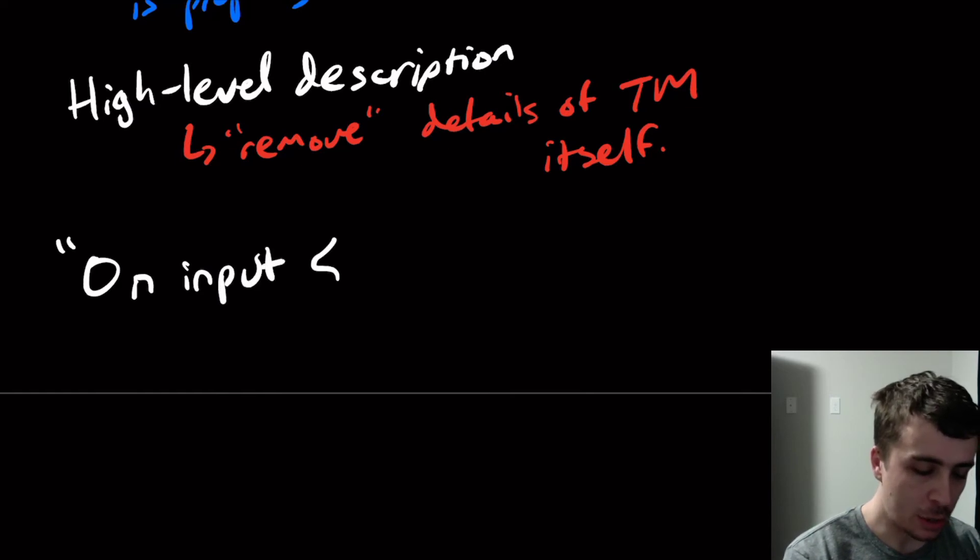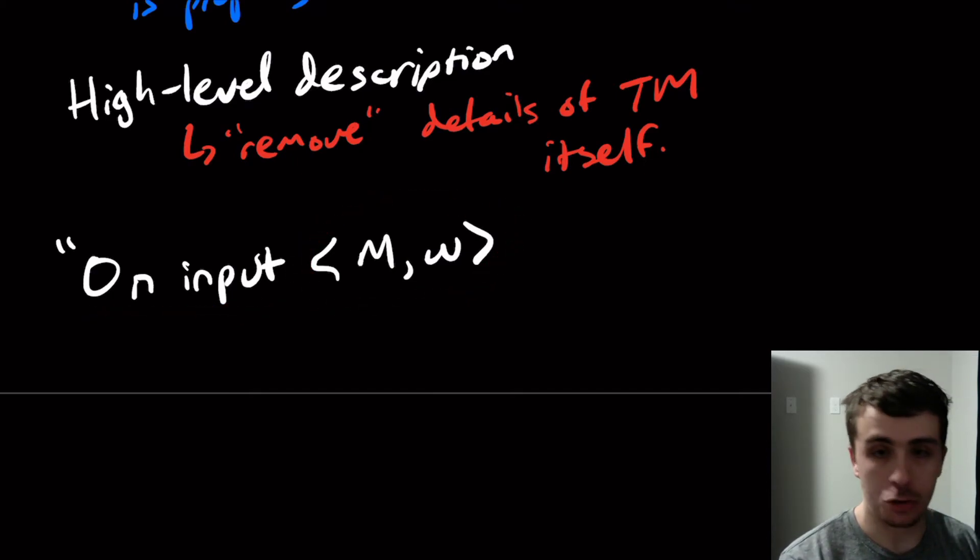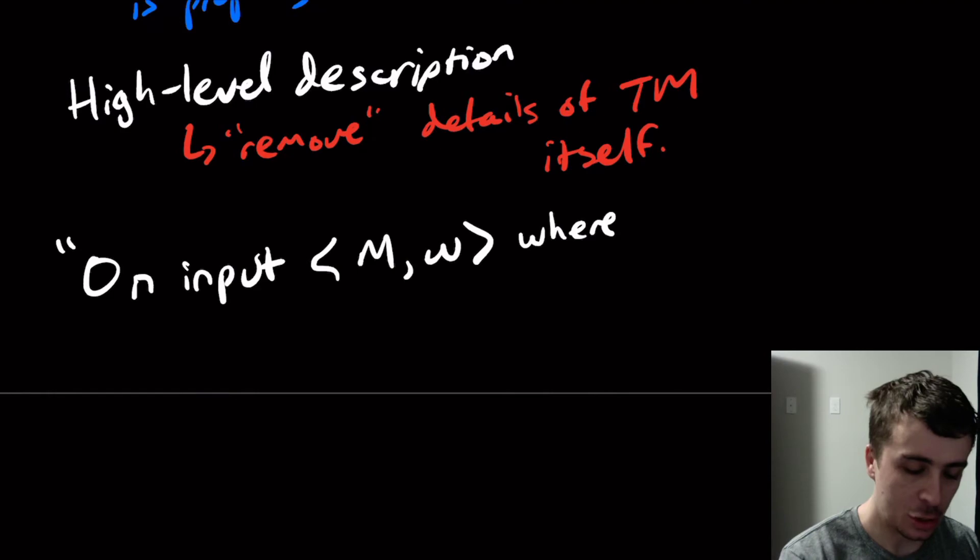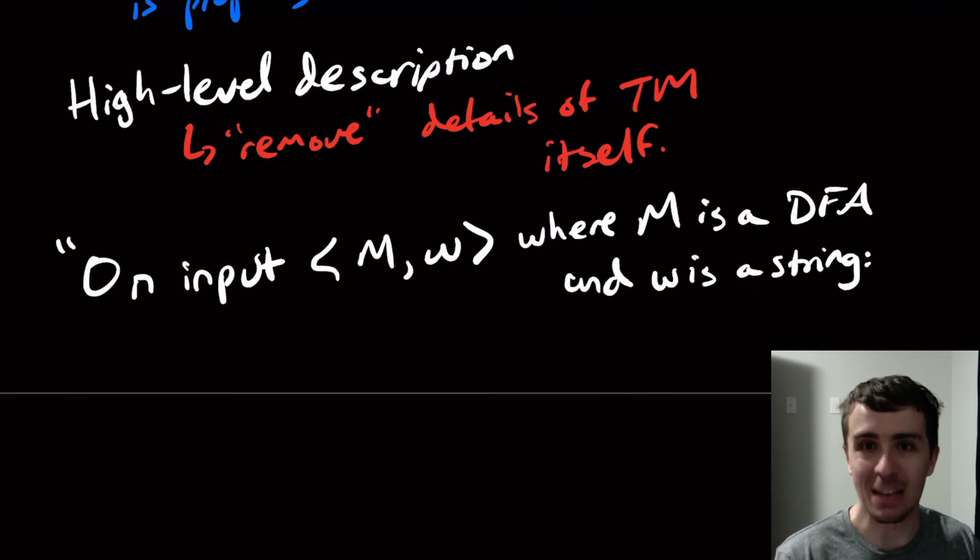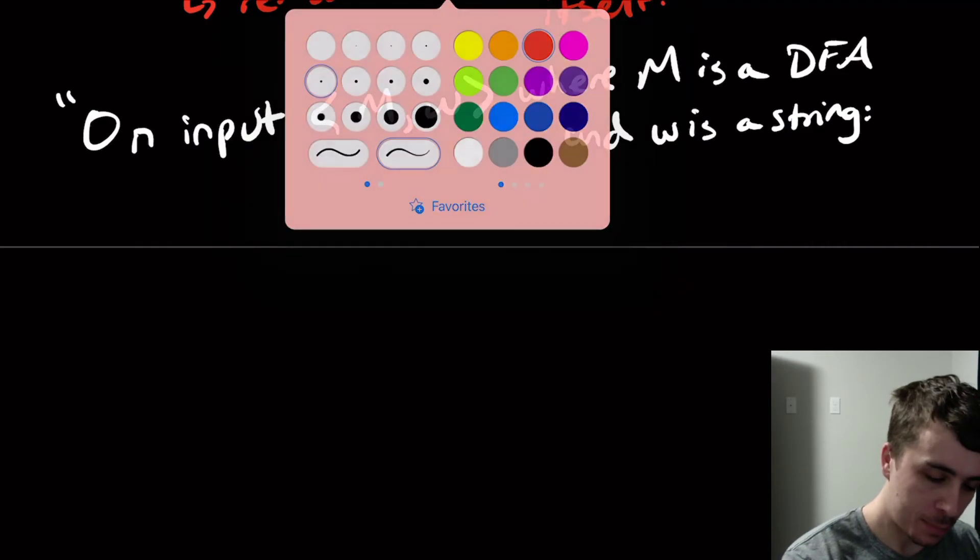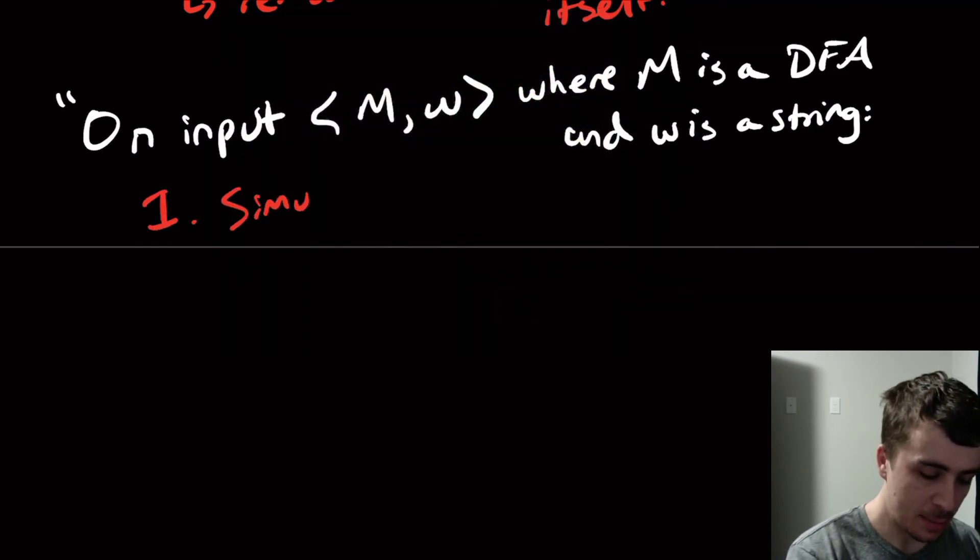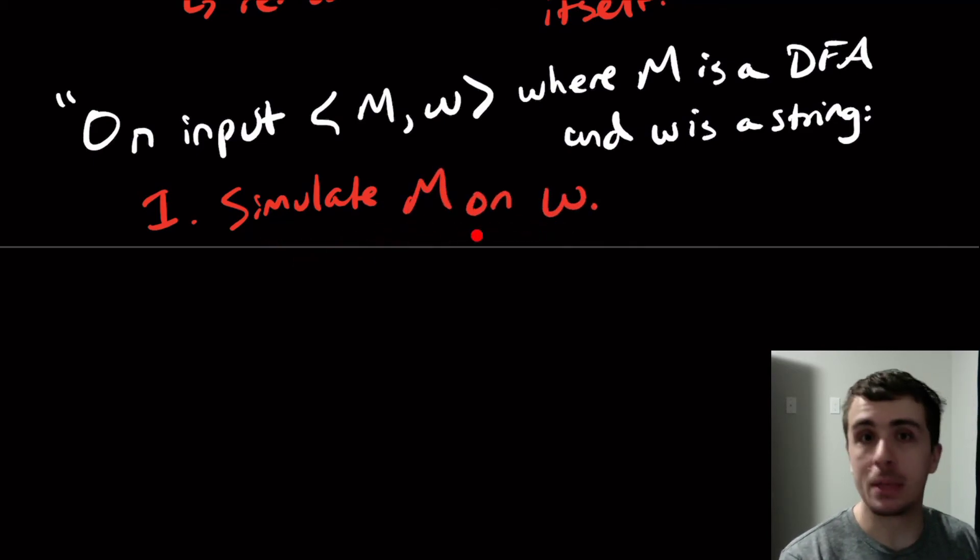So what I'm going to do here is I'm going to give a high level description. So the way that we're going to do this is I'm going to write something like this, which starts off on input, then the string that we want. And we need to actually check that it really is a DFA and a Turing machine. So where m is a DFA and w is a string. I can't say w is in the language of m here because that's the problem we're trying to solve anyway. So what do we do here? We simulate m on w.